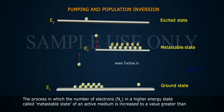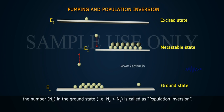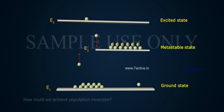The process in which the number of electrons N2 in a higher energy state called metastable state of an active medium is increased to a value greater than the number N1 in the ground state. That is, N2 greater than N1 is called as population inversion. How could we achieve population inversion?